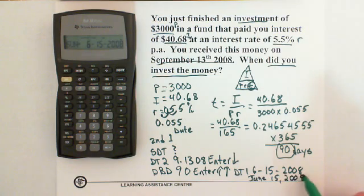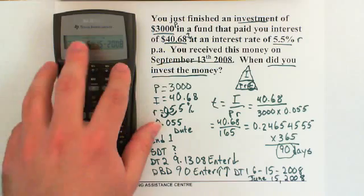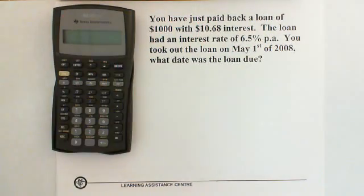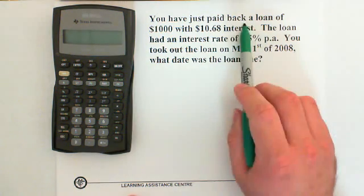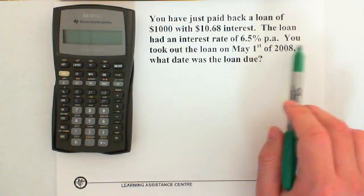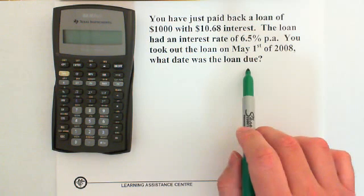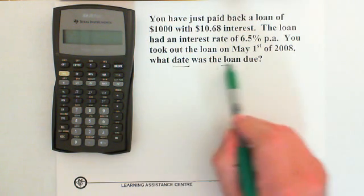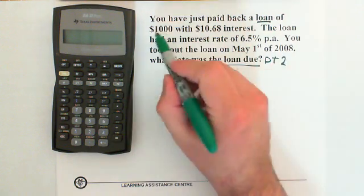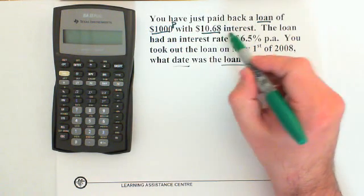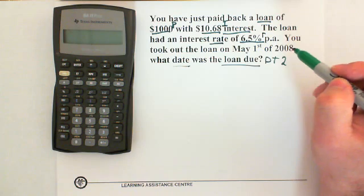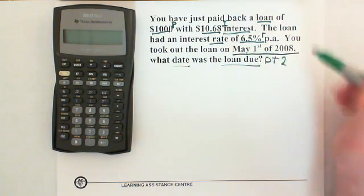Let's try another one. You have just paid back a loan of $1,000 with $10.68 interest. The loan had an interest rate of 6.5 percent per annum. You took out the loan on May 1st of 2008. What date was the loan due? So they want to know the date the loan was due, so that means they want date 2.